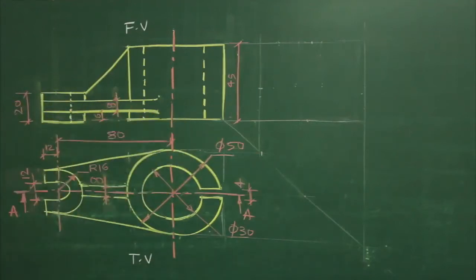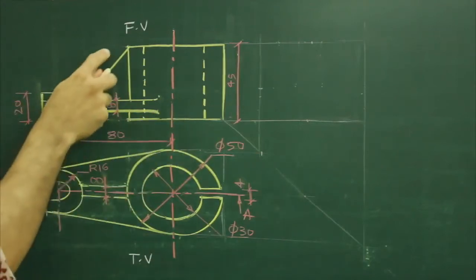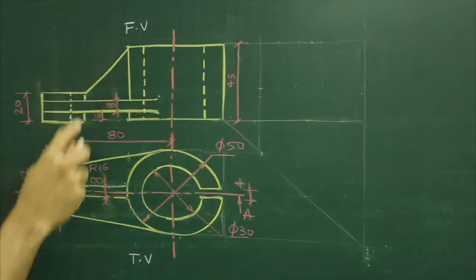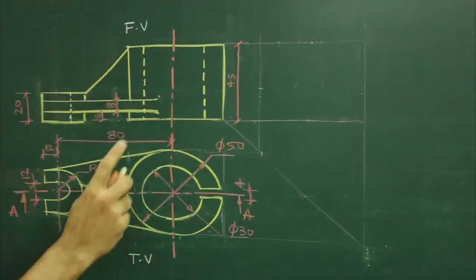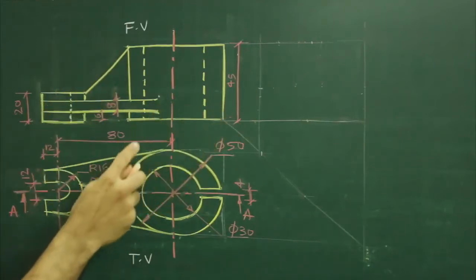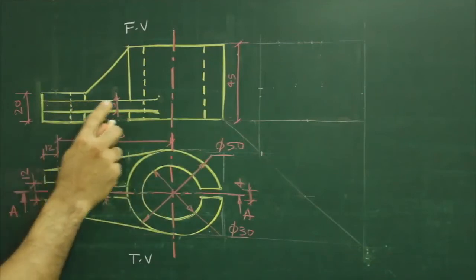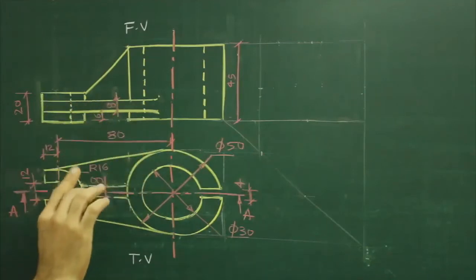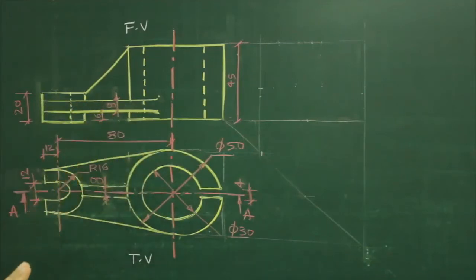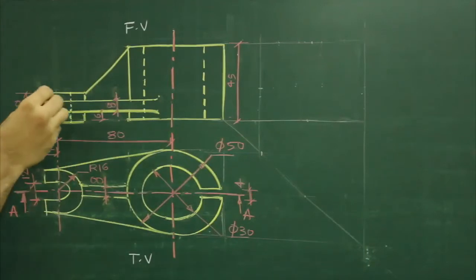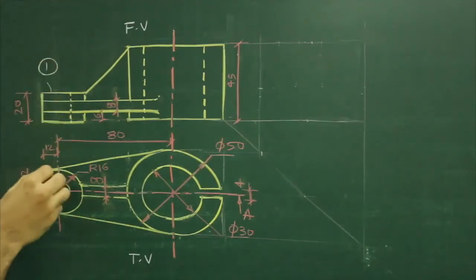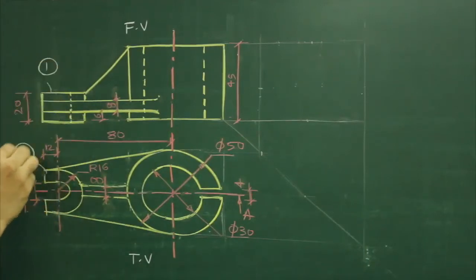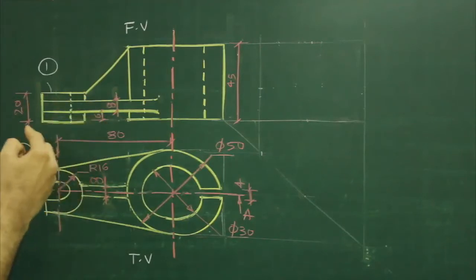So in the side view, we will have a rectangle plus this inclined portion which is also a rectangle. So more or less we have four objects, and we will start with the first one — this circle and rectangle.